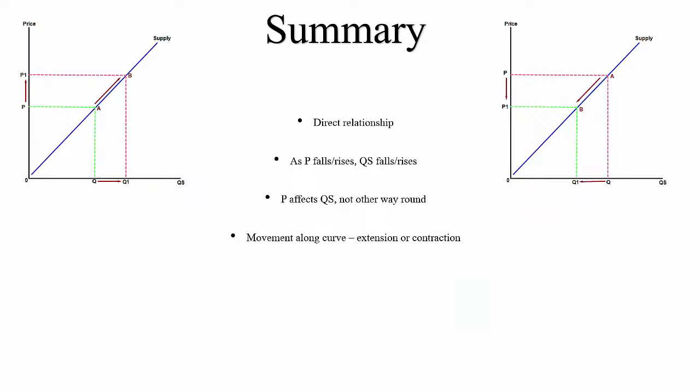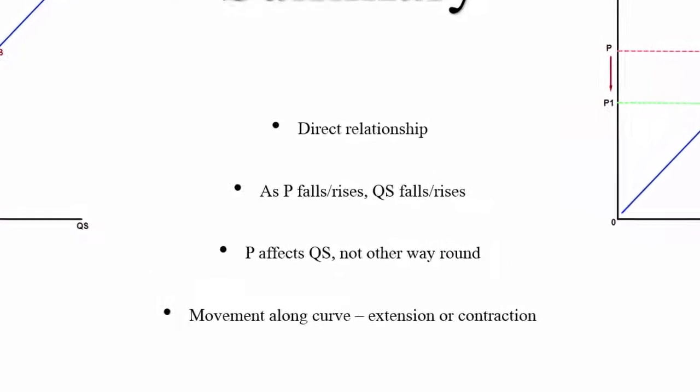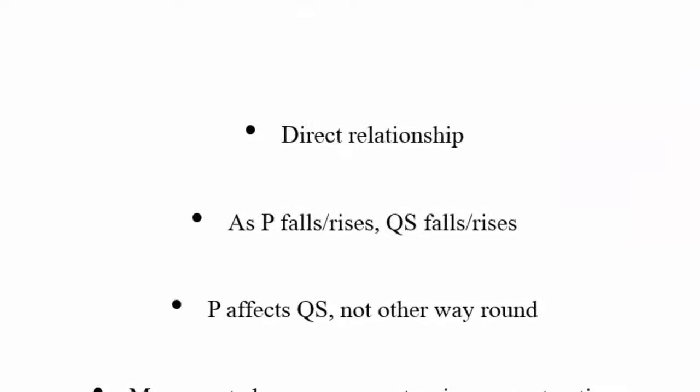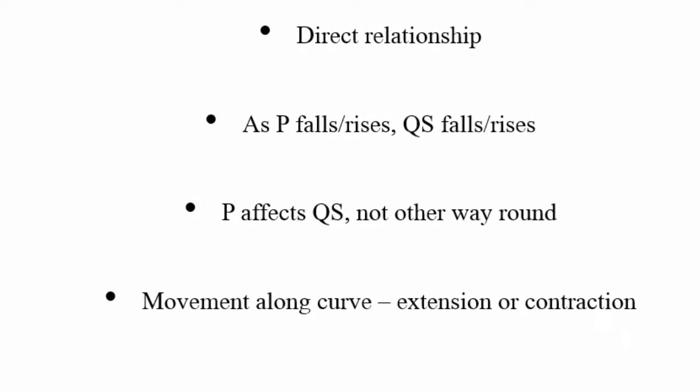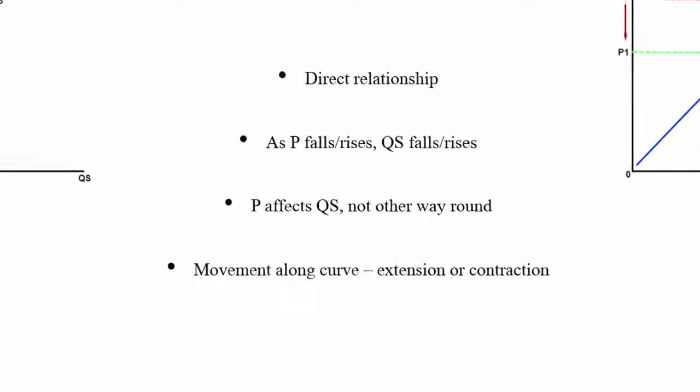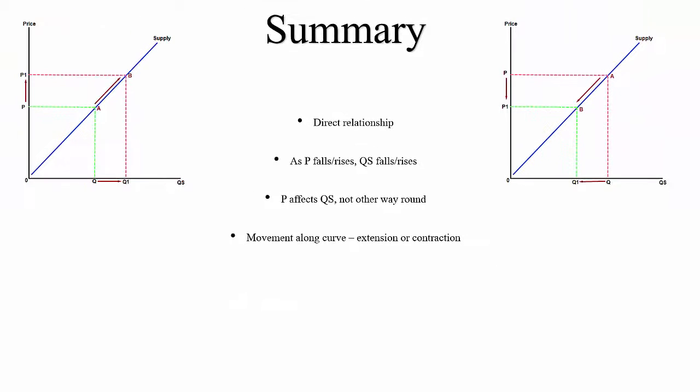The summary is that there's a direct relationship between price and quantity supplied. As the price rises so does quantity supplied, as the price falls so does quantity supplied. Price affects quantity supplied not the other way around, and movements along are extensions or expansions and contractions.